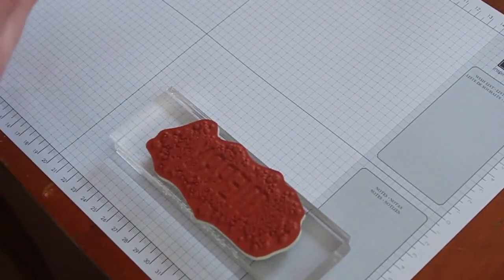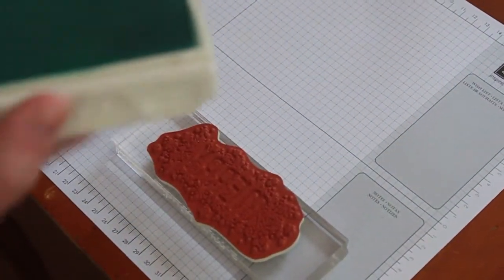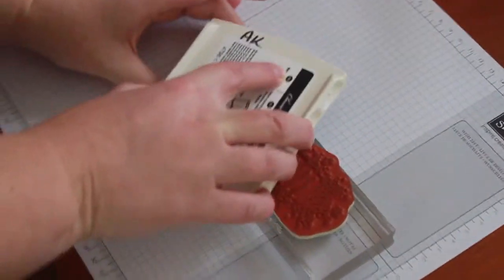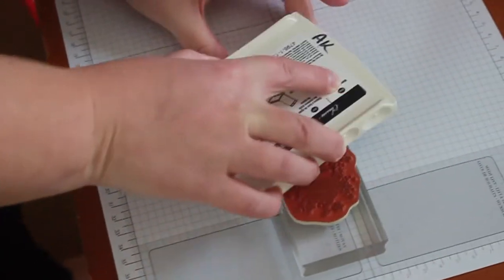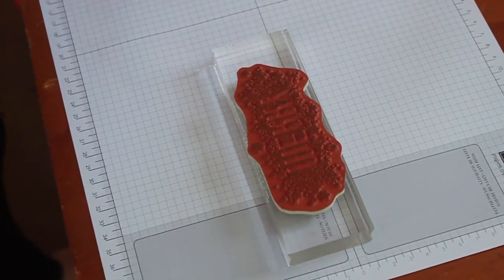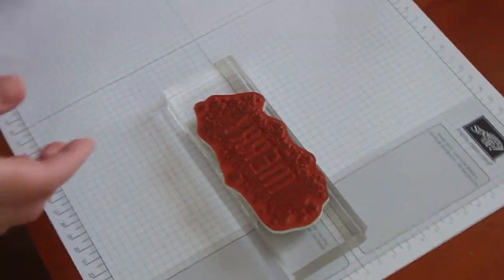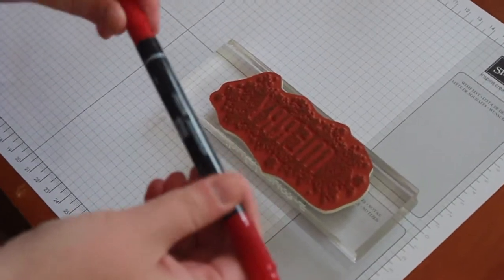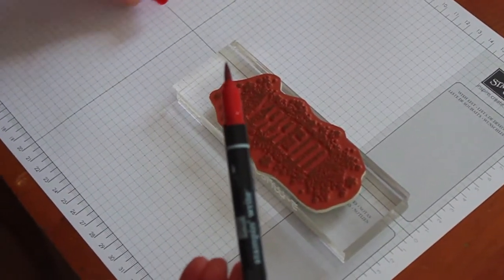The first thing you're going to do is use your light colored ink to ink up your stamp. Then you're going to take the brush tip, the larger tip of your marker.